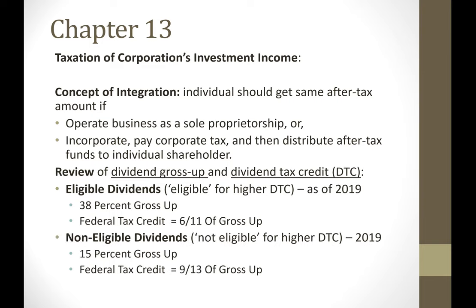Remember, there still is a provincial dividend tax credit as well, but the provincial fraction varies from province to province. For non-eligible dividends, the gross up is 15% and the federal tax credit is 9 over 13 of the gross up. These figures are as of 2019, so depending on when you're watching this video tutorial, these amounts may have changed since 2019.